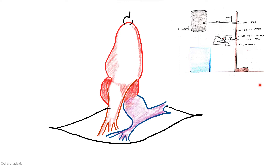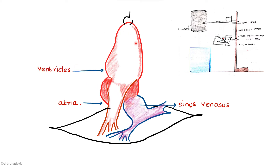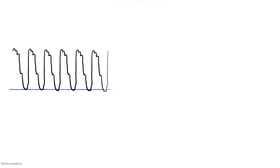Now we will see the different chambers of the heart. The first one is the sinus venosus, which is the pacemaker for the frog's heart. Then we have the atria, the ventricles, and the bulbus arteriosus. When we record the normal contraction of the frog's heart, we can see all these components. In the normal cardiogram, the downstroke is systole and the upstroke is diastole.